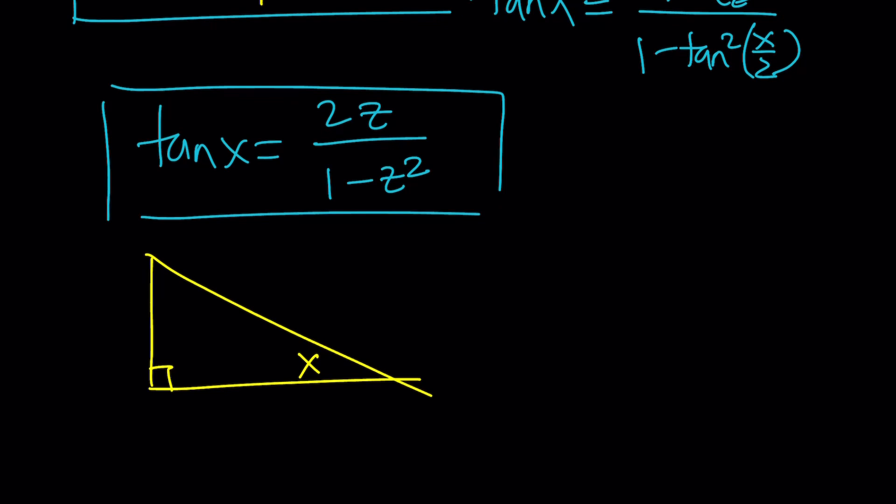So if tangent x is equal to 2z over 1 minus z squared, then we can place the lengths as follows. And from here we're going to find the hypotenuse. But to keep a long story short, if you do the Pythagorean theorem, the hypotenuse should be 1 plus z squared. Make sense? You can check it out. And from here we're going to find cosine x. Cosine x is going to be 1 minus z squared divided by 1 plus z squared. That's something we're going to need in our expression.